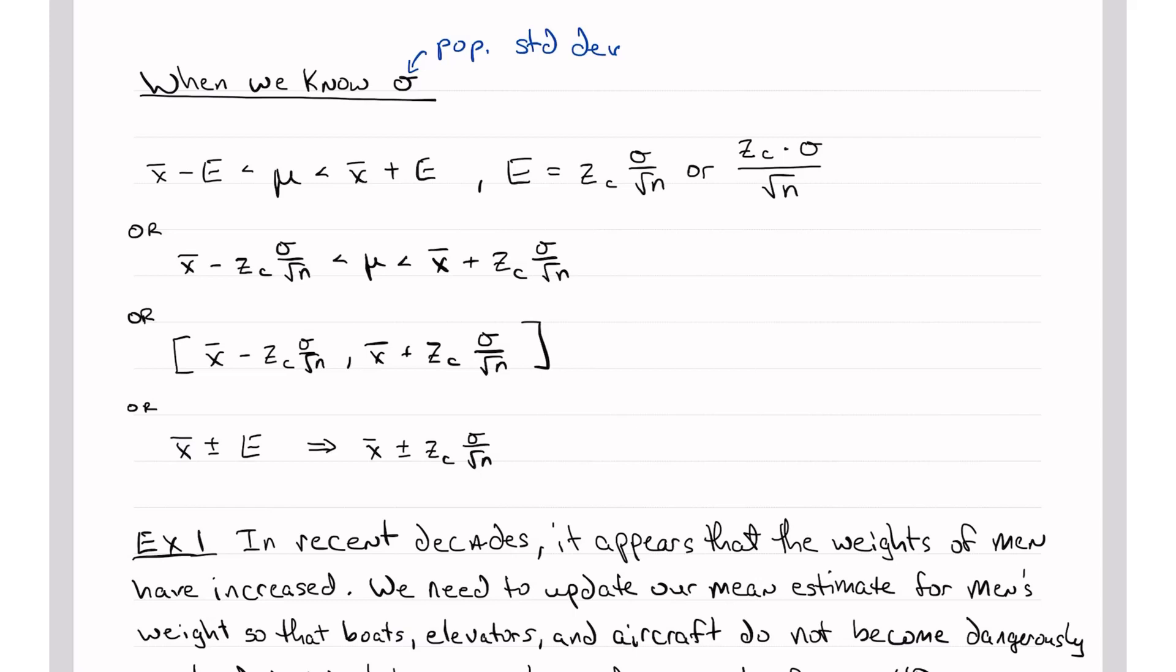So your book has this formula. It's also listed on the formula sheet. And it says x-bar minus E, and then x-bar plus E. So mu is between x-bar minus E and x-bar plus E.